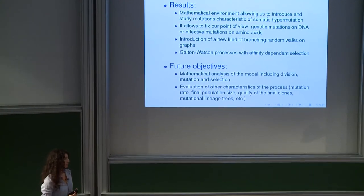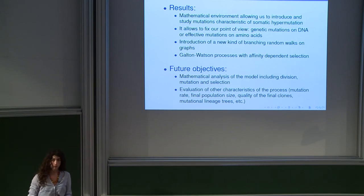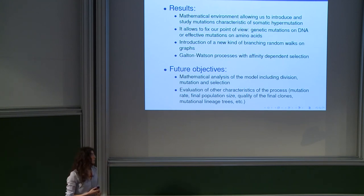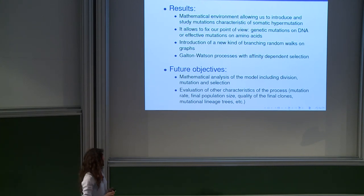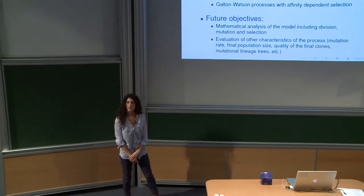So what we have done is to build a mathematical environment which is flexible enough in order to introduce and study different mutational rules and their interaction between division and selection for example. Also it allows us to fix our point of view and decide if we are looking at the mutation at the DNA level or directly observing the effective mutation on the amino acid chain. Actually we obtain models which are of the same kind. We have just to be clear about the affinity. And what we want to do is mathematically analyze the complete model including mutation, division and selection. That's what I am working on just right now. And also try to evaluate other characteristics of the process in order to have a more global view of the process as well. Thank you for the attention. That's all I wanted to say today here. Thank you.